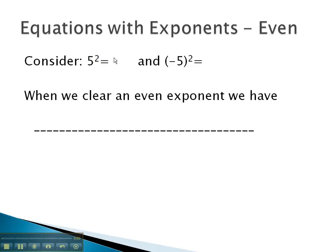5 squared equals 25. Negative 5 squared also equals 25. Notice there are two numbers that, when squared, equals 25, one positive and one negative.